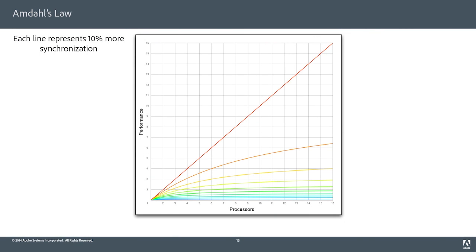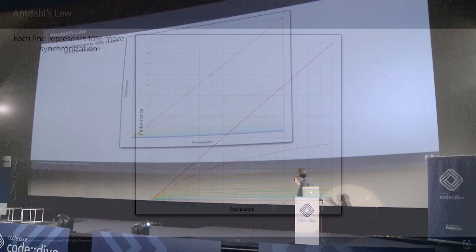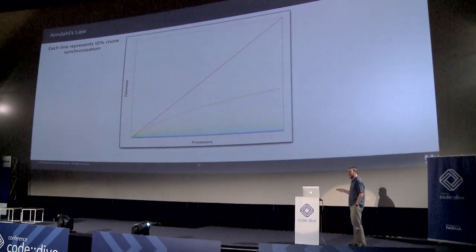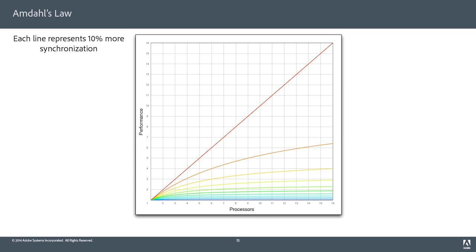Here's a more meaningful linear graph of Amdahl's Law. Each line represents just 10% synchronization so you can see how fast you're falling off. Out at 16 cores with just 10% synchronization, you're doing a little bit better than six times faster — the red line is straight linear scale. Just a little bit of blocking, a little bit of synchronization — which is what raw synchronization primitives cause — kills your performance.